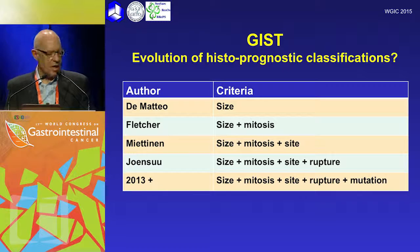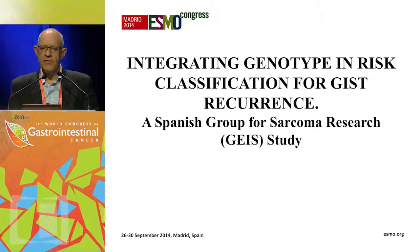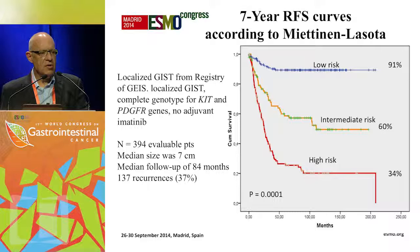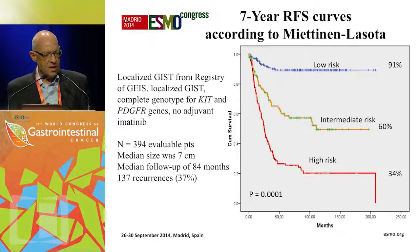When looking at prognostic classification for GIST, we've examined size, mitotic figures, tumour site, and tumour rupture, and a key question is the role of mutation analysis. A registry study by the Spanish group at ESMO last year, involving over 390 patients who did not receive adjuvant imatinib, classified patients using the Miettinen criteria into low, intermediate, and high risk, and the curves nicely separated as expected.